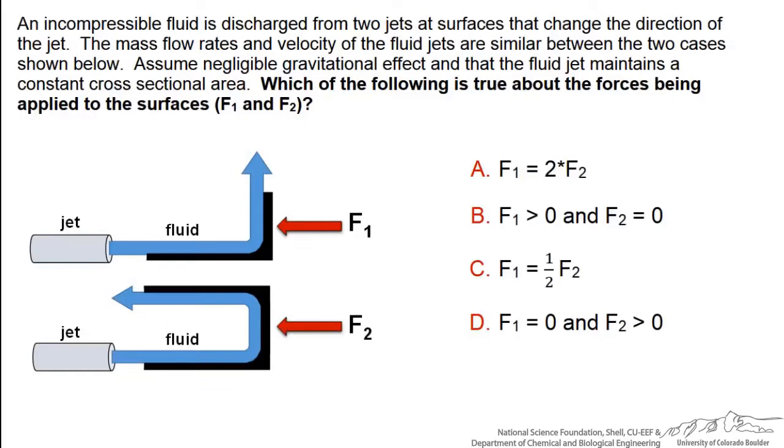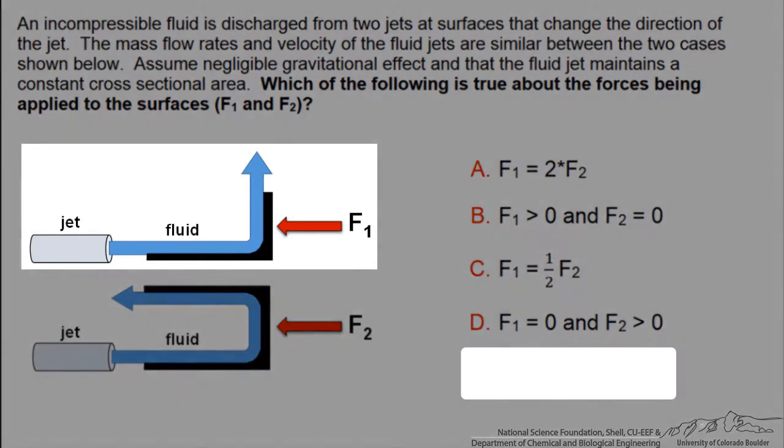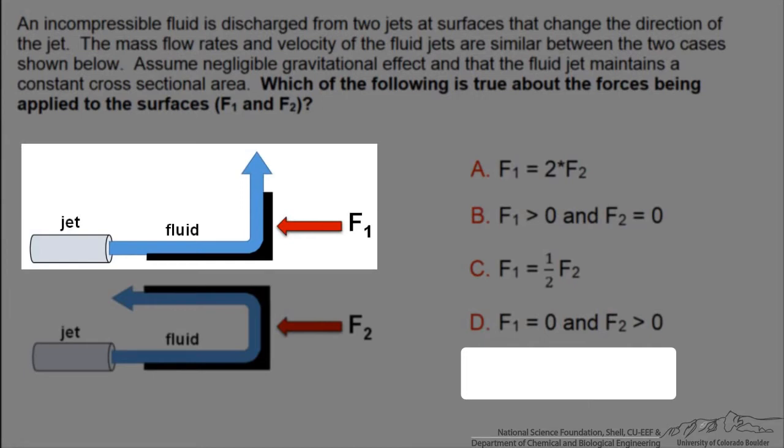So what is happening? We are using some surface to redirect the direction of the jet. In this situation at the top, this surface looks like an L shape and redirects the fluid from an x direction to a y direction only.